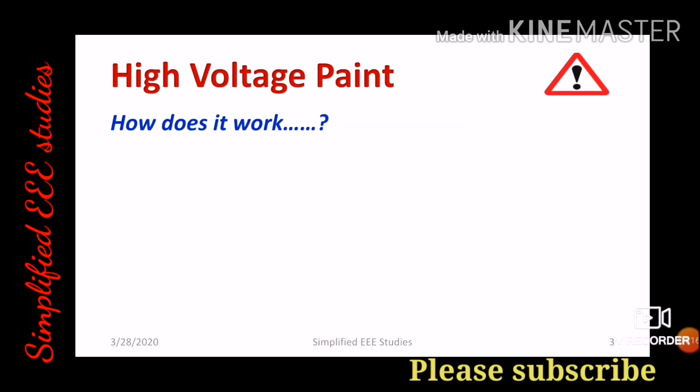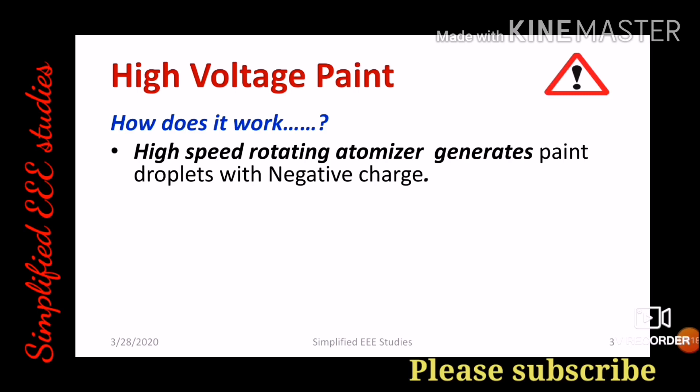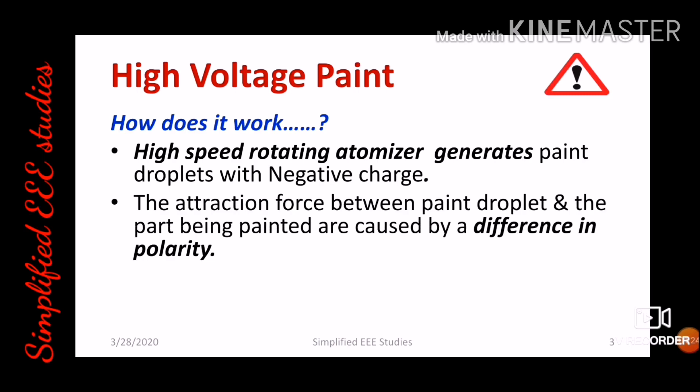How does high voltage paint operate? The high speed rotating atomizer generates paint droplets which have a negative charge. The attraction force between the paint droplet and the part being painted is caused by the difference in polarity. The device operates based on the laws of electrostatics. The surface to be painted has a positive charge and the paint droplet has a negative charge. As you know, opposite charges attract.